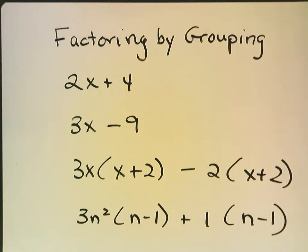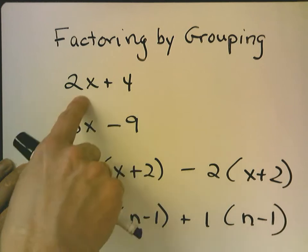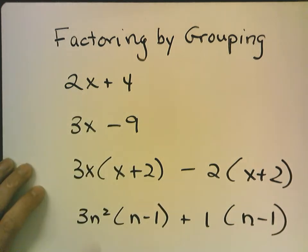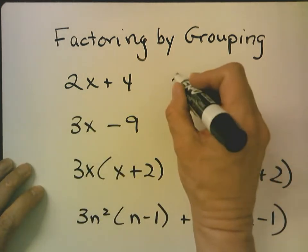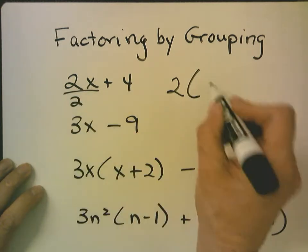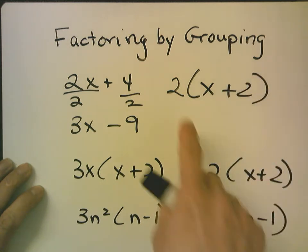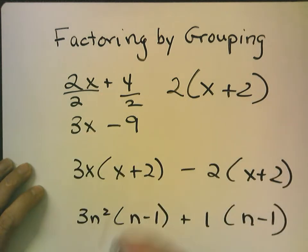Okay, now we're going to go over the concept of factoring by grouping. So here, when I ask you to factor this, you look for the GCF. The GCF is 2. 2x divided by 2 is x, 4 divided by 2 is 2. And to check it, you'd say 2 times x plus 2 times 2 is 4.